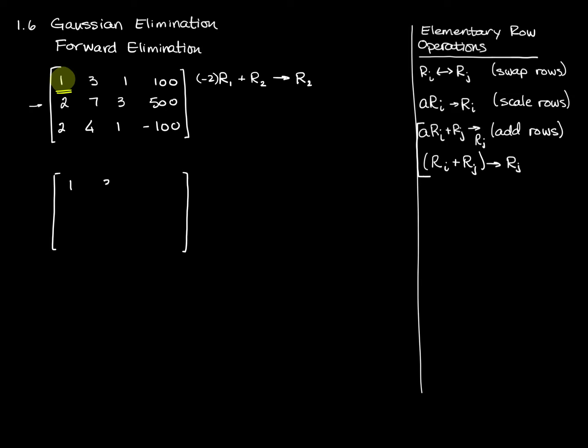And when I do, I get for my new row two, let's see, I'll do this. Row one stays the same, one, three, one, 100. Row two now, however, is going to be negative two times row one, position one. So negative two times one is negative two. And I'm going to add negative two to positive two, and I'm going to put it here. Then I'm going to take negative two times position two, three, so that gives me negative six, and I'm going to add it to row two. It gives me a one. Negative two times one is negative two. Negative two plus three is one. Negative two times 100 is negative 200. Adding that to 500 gives me 300.